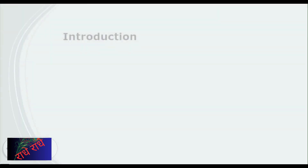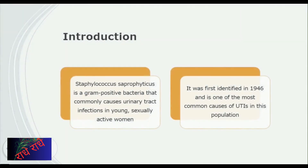Within the population of young, sexually active women, Staphylococcus saprophyticus, identified since 1946, has become one of the most common causes of urinary tract infections (UTIs). If you are in this group, it is important to be aware of potential warning signs such as pain, frequent urination, and cloudy urine that this bacterium can cause.